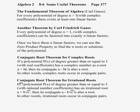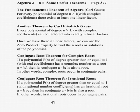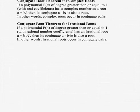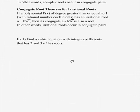The Conjugate Root Theorem for irrational numbers states that for a polynomial p(x) where the degree is greater than or equal to 1 with real number coefficients, if you find an irrational root a plus b times the square root of c, then you should also have its conjugate, a minus b times the square root of c. Irrational roots occur in conjugate pairs as well.